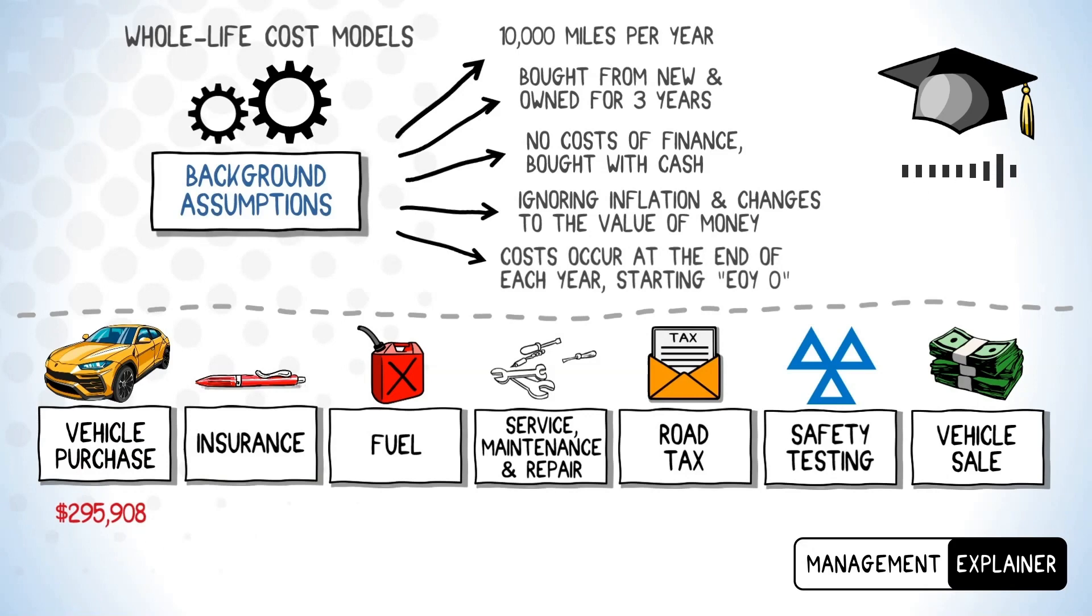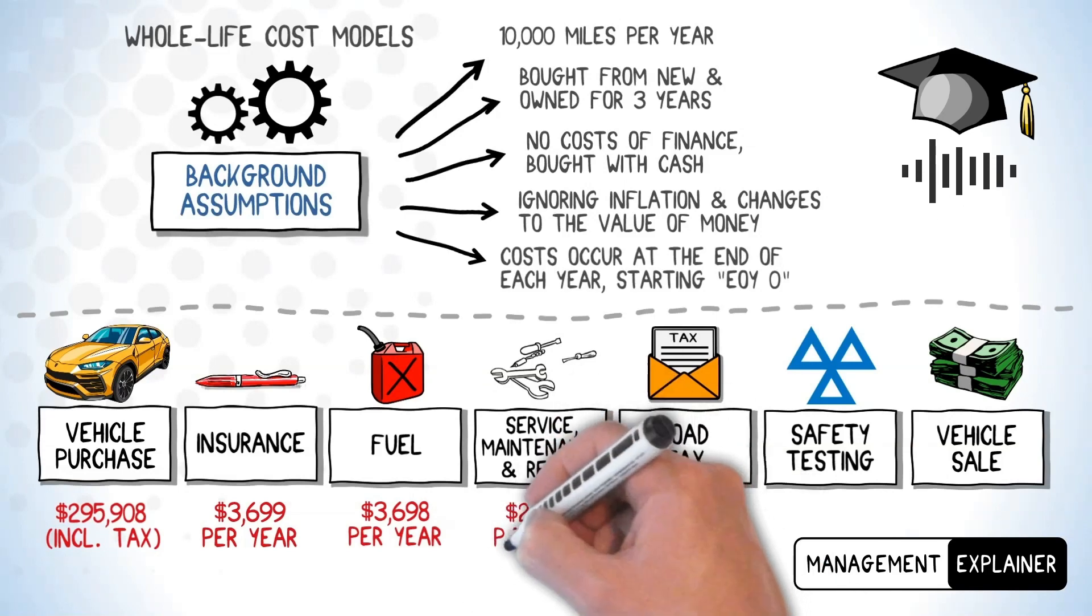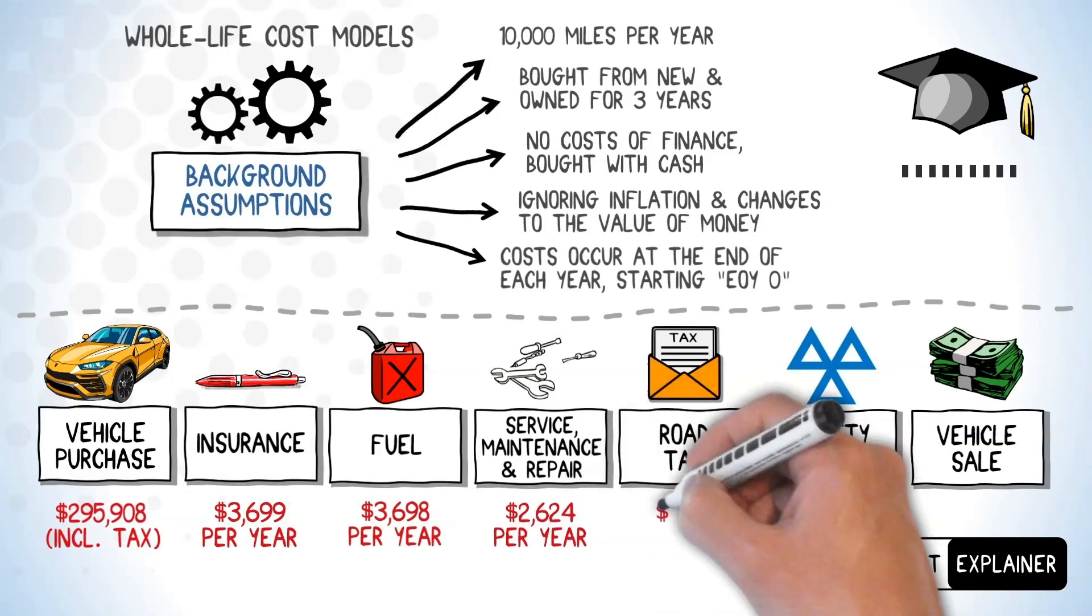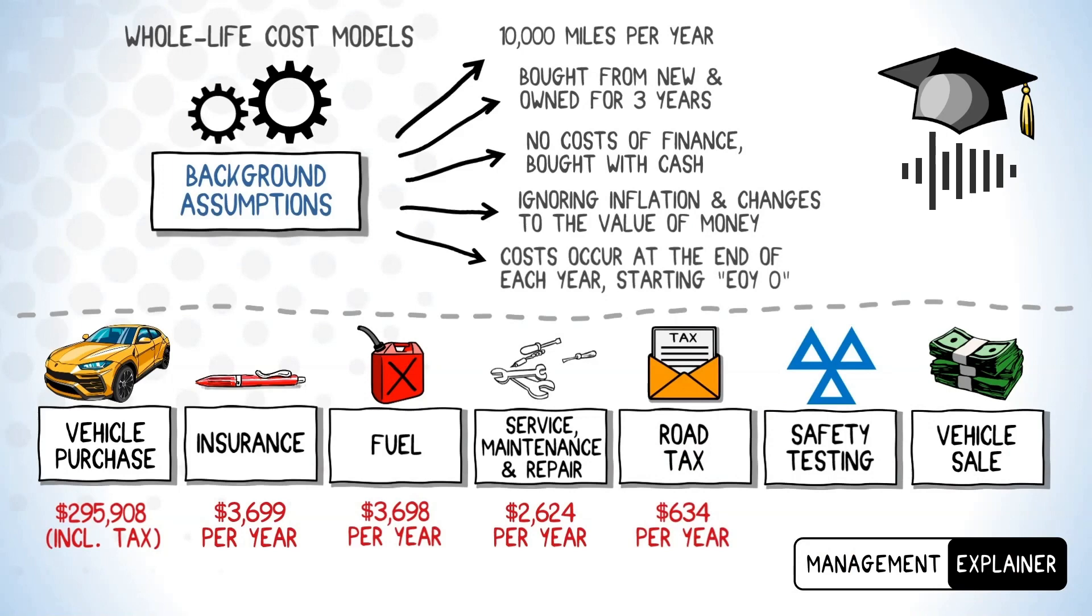In the UK there's a separate road tax that is payable when the vehicle is registered for the first time, but we're including this in the purchase cost. Based on our annual mileage, we have an annual insurance cost of $3,699 and an annual fuel cost of $3,698. Our annual service maintenance and repair costs are estimated at $2,624 and road tax is $634. Because the car is new we don't have to pay for vehicle safety testing, so we can drop this from our model. At the end of the ownership period we expect to sell the car for $230,550.